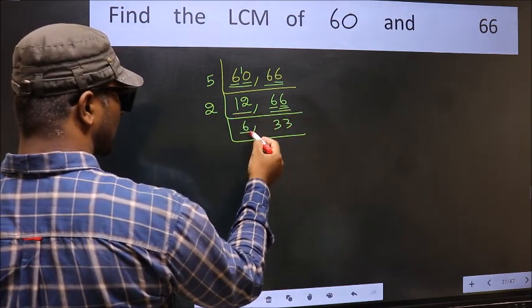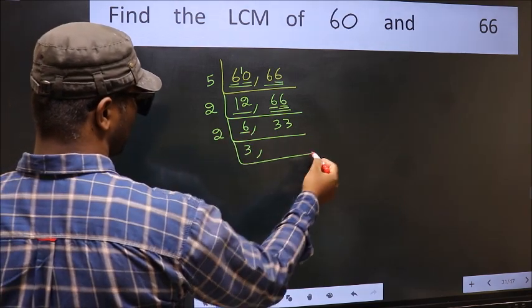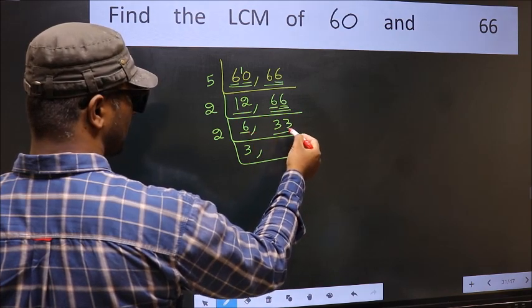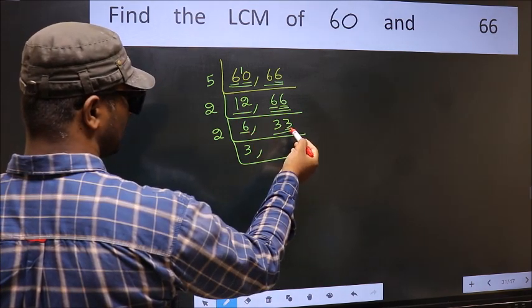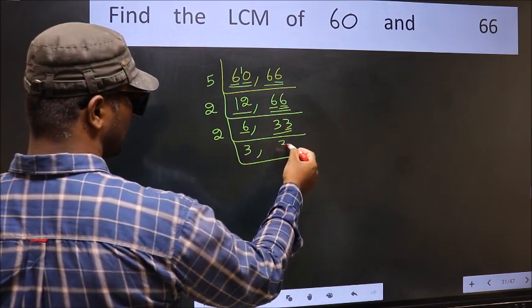Now here we have 6. 6 is 2 times 3 is 6. The other number 33, last digit 3, not even, so this is not divisible by 2. So we write it down as it is.